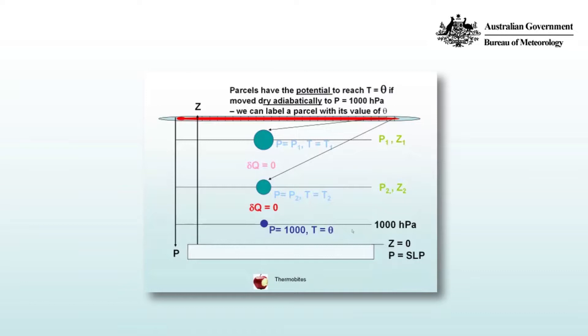Parcels have the potential to reach T = θ if moved dry adiabatically to P = 1000 hPa, making this value a useful label. This dry adiabatic process is very useful to replicate on a Skew T-Log P aerological diagram.